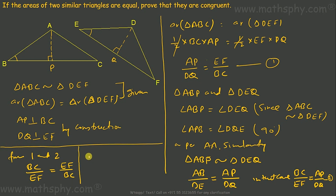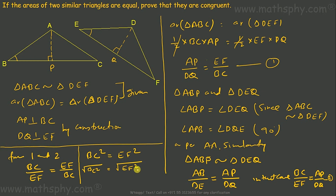From EF over BC equals BC over EF, cross-multiplying gives BC squared equals EF squared. Taking the square root of both sides, BC equals EF.